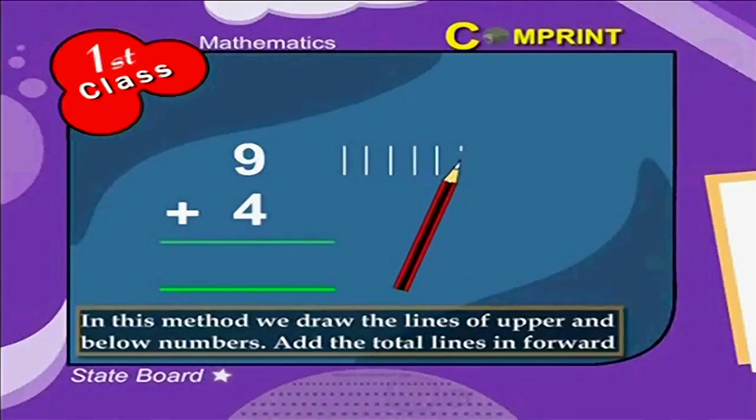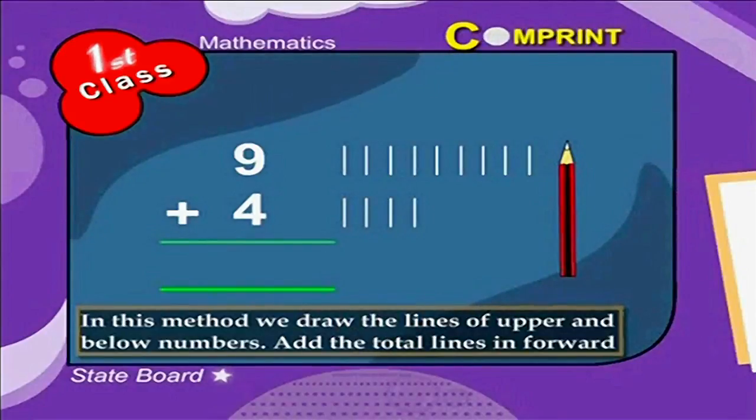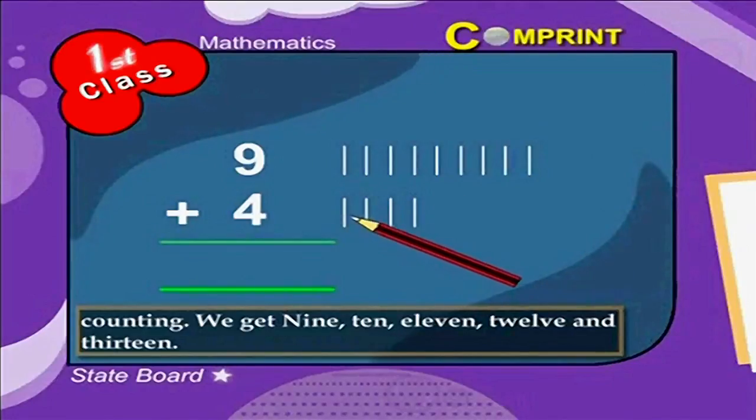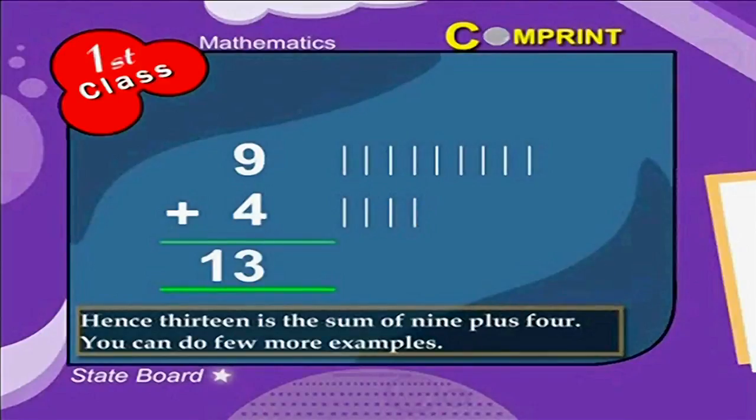Add the total lines in forward counting. We get nine, ten, eleven, twelve, and thirteen. Hence, thirteen is the sum of nine plus four.